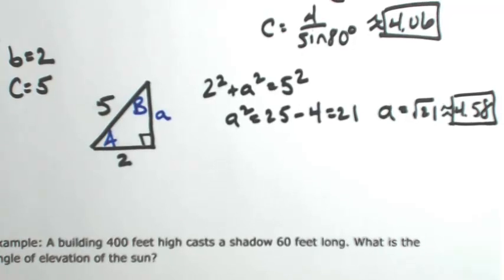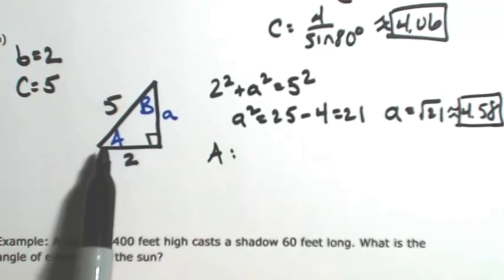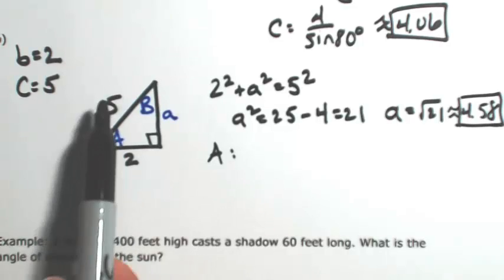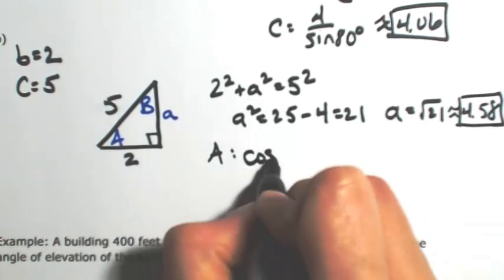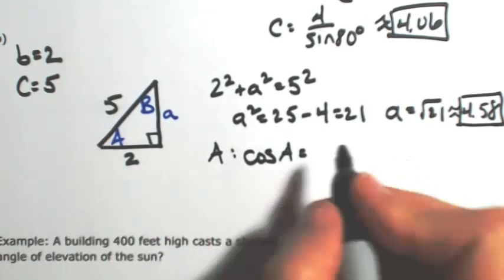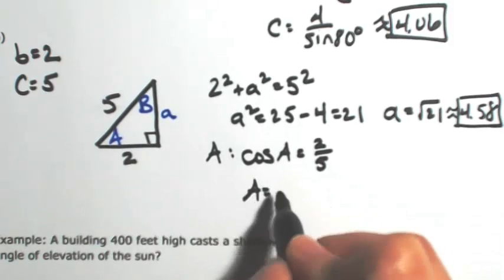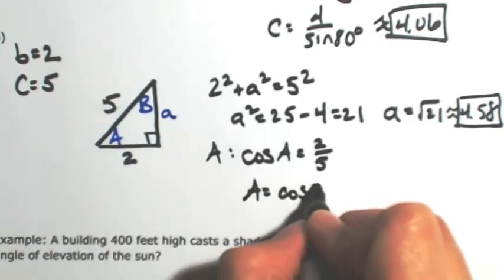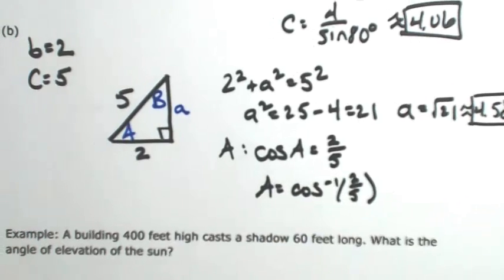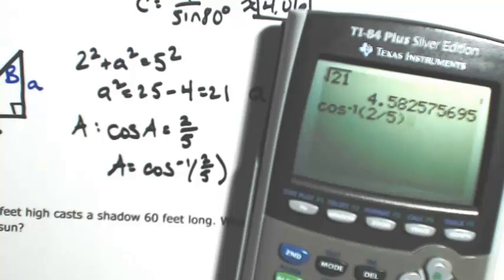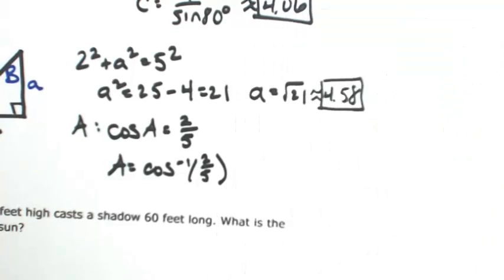Now I need to find angle A or angle B — it doesn't really matter which one I start with. Using right triangle trigonometry for angle A, the given information involves the adjacent side and the hypotenuse, which corresponds to the cosine function. So the cosine of angle A equals 2 over 5. To find angle A, I undo cosine using the inverse cosine. The inverse cosine of 2 over 5 in degrees gives approximately 66.42 degrees.